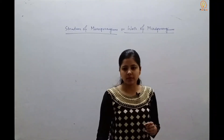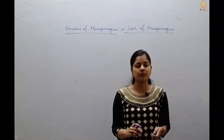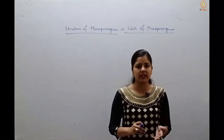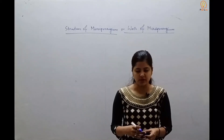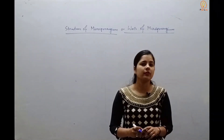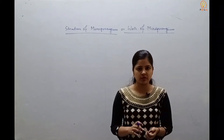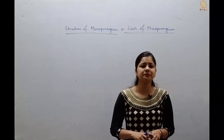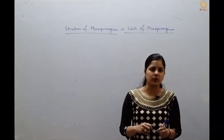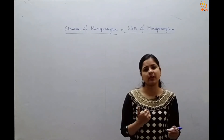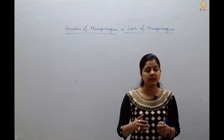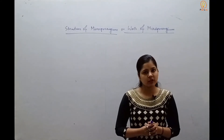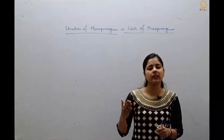The microsporangium of a typical angiospermic anther is usually bi-lobed and dithecous, having four microsporangia — that is why the angiospermic anther is called tetrasporangiate. When we look at the cross-section of the microsporangium found in the anther, it is usually circular in outline and has four different wall layers.